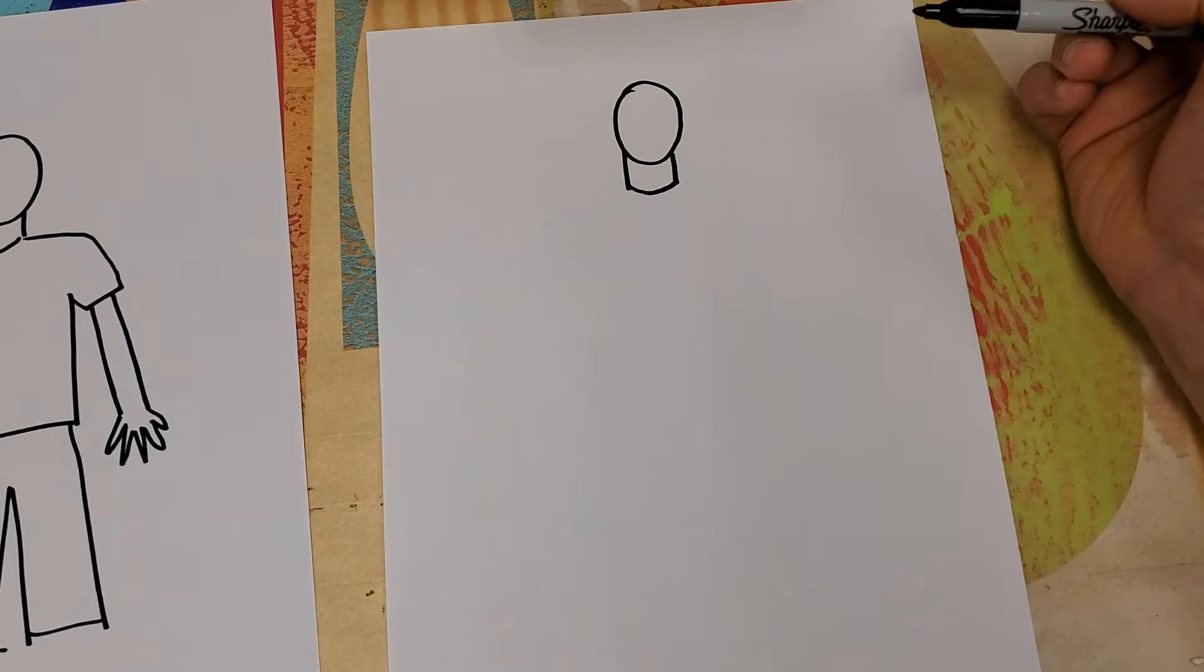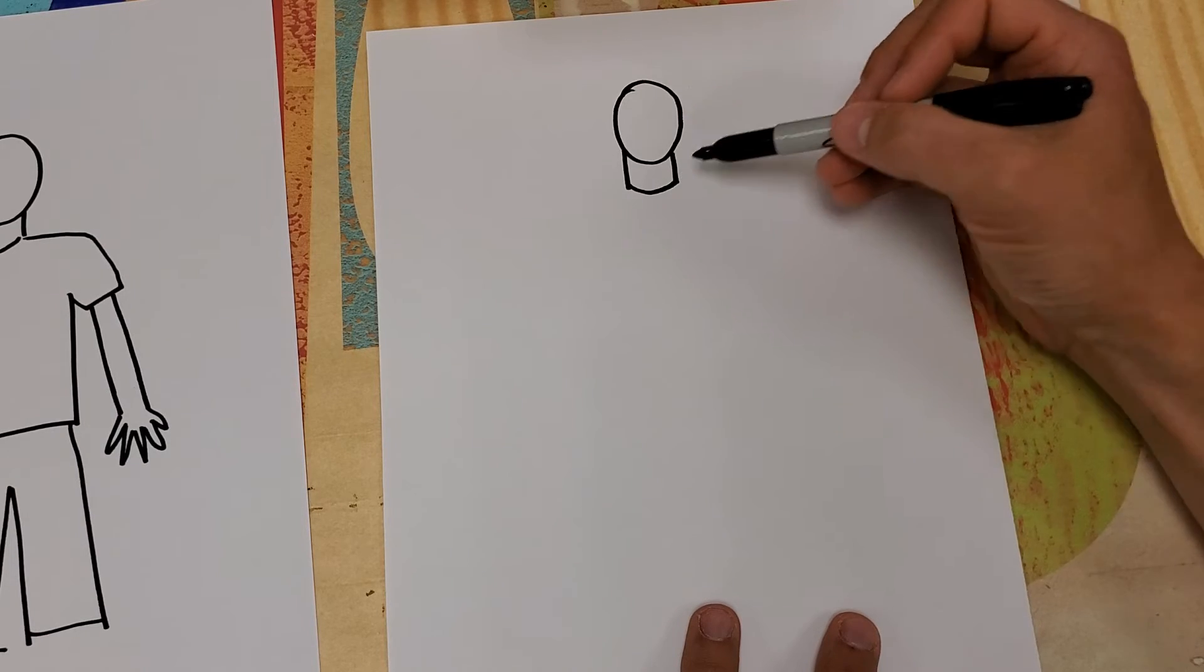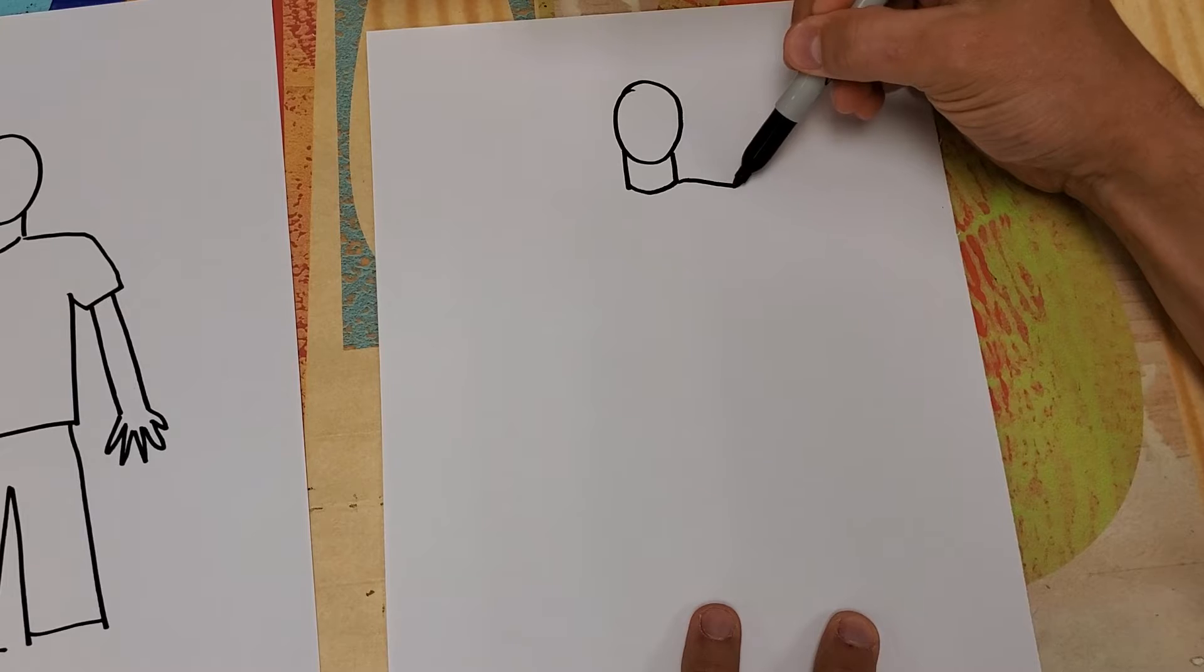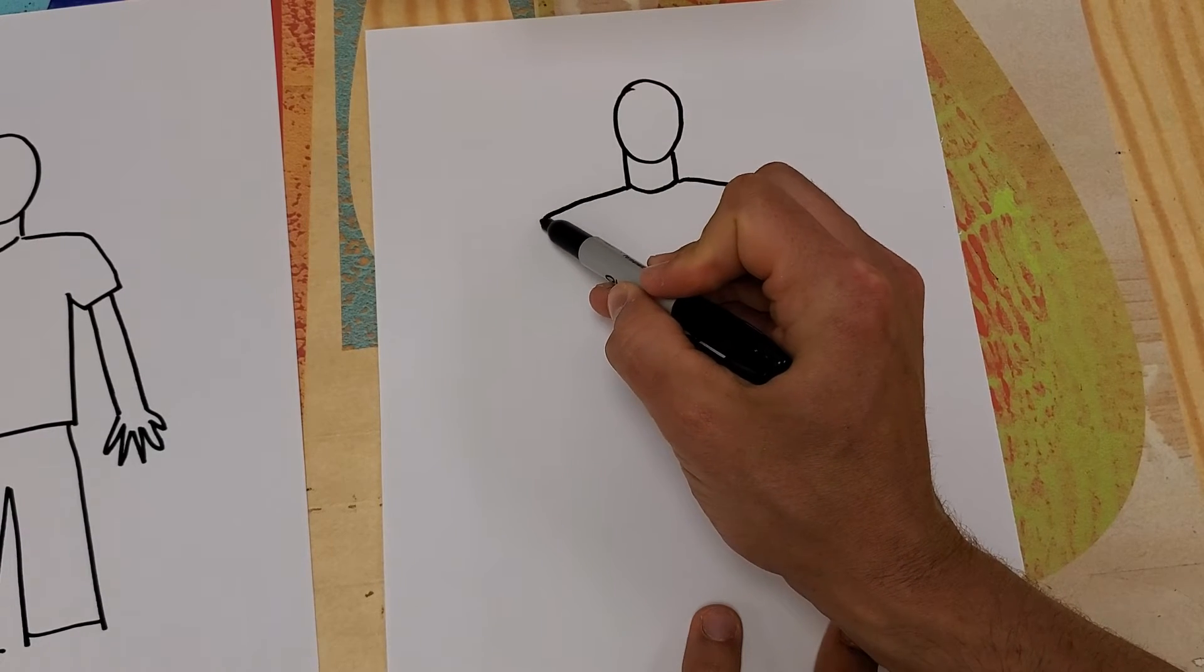But again, if you're thinking of something different, that would be okay too. From the sides of the neck, shoulders come out slightly and then curve. Out slightly, then curve.